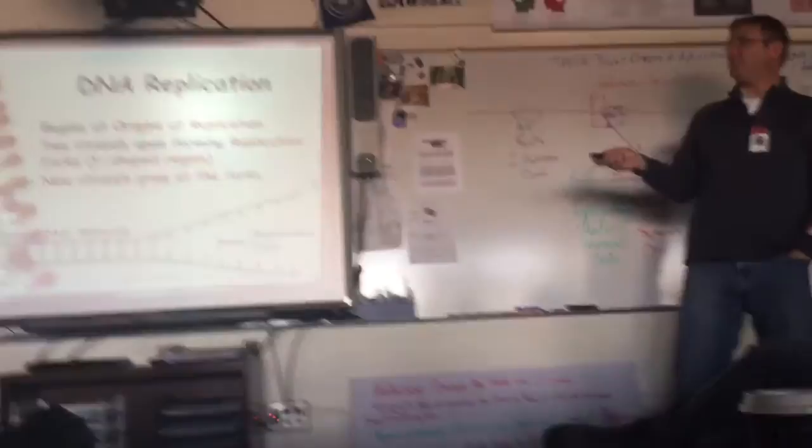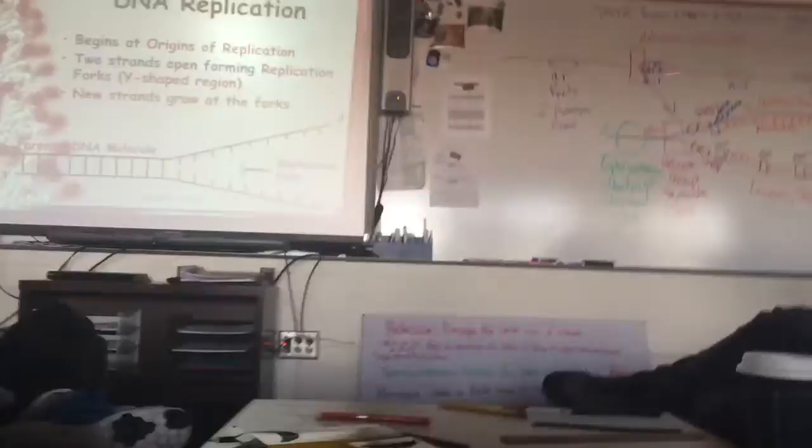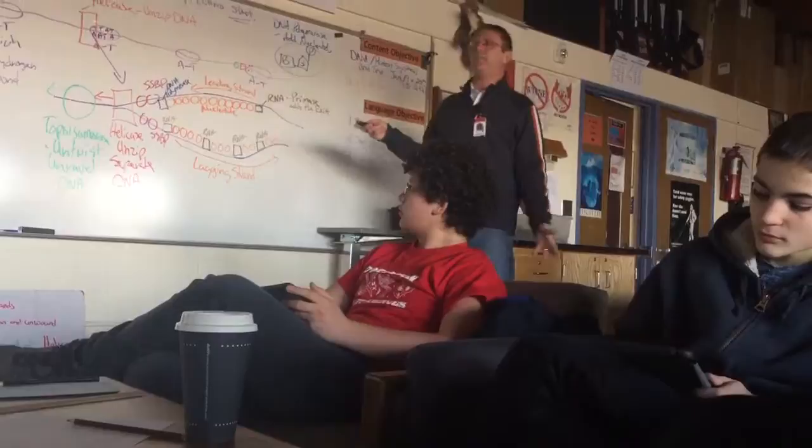Replication begins at what we call the origins of replication. These origins of replication will occur many times along a strand of DNA. You can see in my picture there are four different origins of replication in one strand of DNA. All this does is it helps to make the process go faster — it's trying to expedite this process.